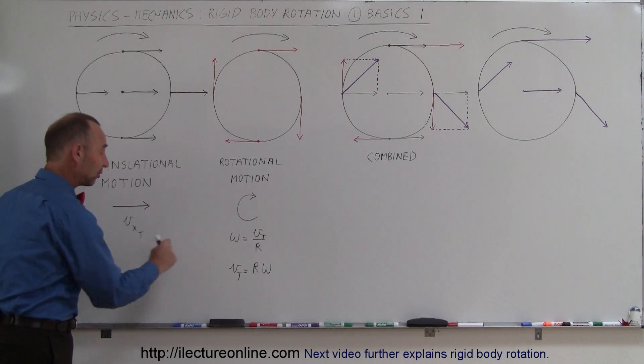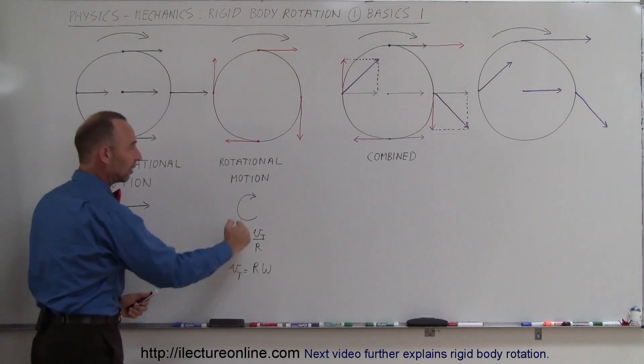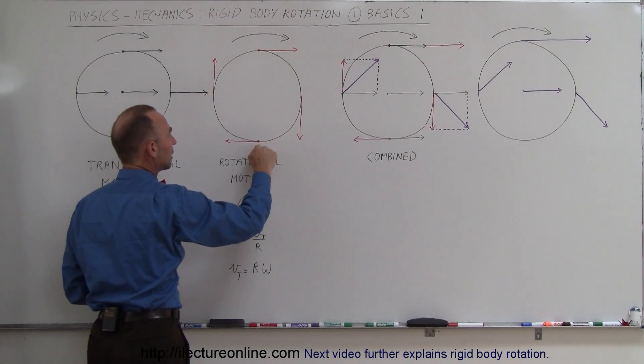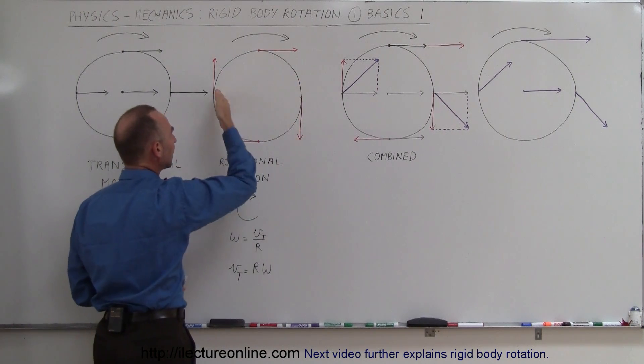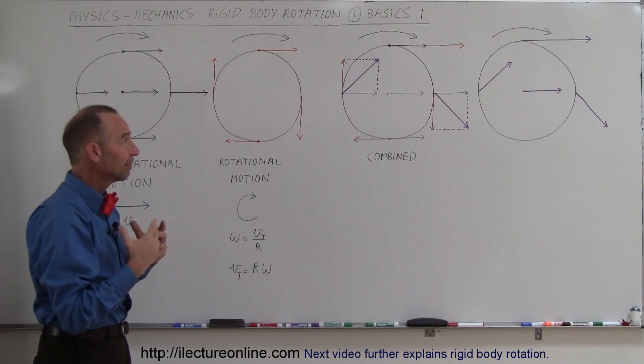So these are definitely vector quantities. This velocity is only in the x direction, but this velocity can be any direction along the rotation of the tire. So over here, the velocity is to the left, over there, the velocity is to the right, here it's down, there it's up. So when we combine the velocity, it's like a vector addition.